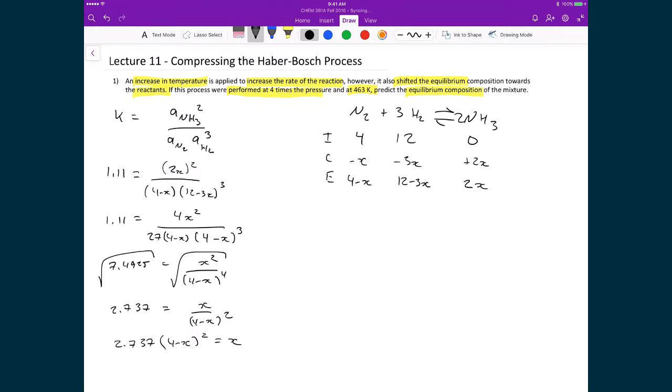And then finally what I'll do is I'll FOIL the 4 minus x squared. So I get 2.737 and I'm going to end up with 16 minus 8x plus x squared. And that's still equal to x.